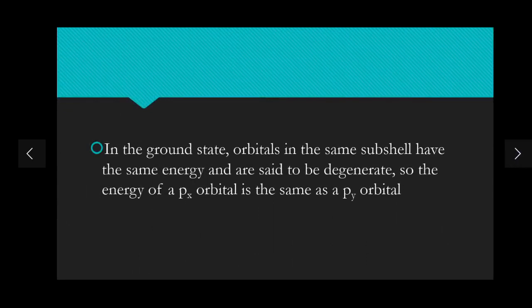In the ground state, orbitals in the same subshell have the same energy and are said to be degenerate. For example, the 2p subshell contains three orbitals — px, py, and pz — and these all occupy the same subshell so they have the same energy. In an exam they may ask why orbitals in the same subshell are degenerate — the answer is that in the ground state they have the same energy.